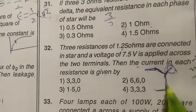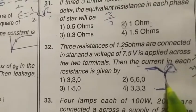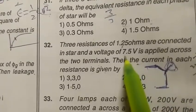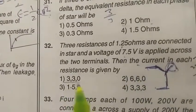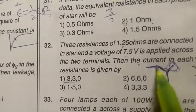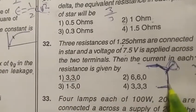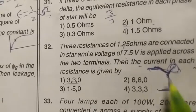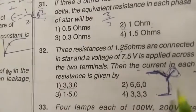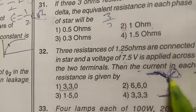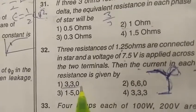1.25 plus 1.25 gives 2.5 ohms. So 7.5V divided by 2.5 ohms is actually 3 amps. In this branch it's 3 amps, in this branch it's also 3 amps, in this branch it's also 3 amps. And the answer is option 1.